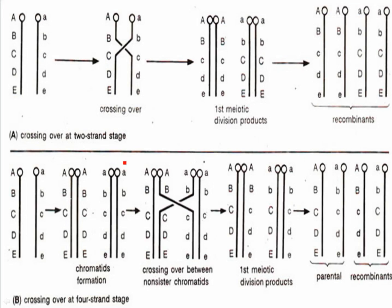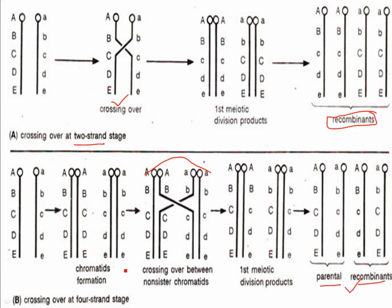There was confusion about whether crossing over occurs at the four-strand stage or two-strand stage. We now know crossing over occurs at the four-strand or tetrad stage. If crossing over occurred at the two-strand stage, after the first and second meiotic divisions you would get all recombinant products. But if crossing over occurs at the four-strand stage — where only two out of four strands actually cross over — after meiosis you get both parental and recombinant combinations. This proves that crossing over occurs at the four-strand stage.